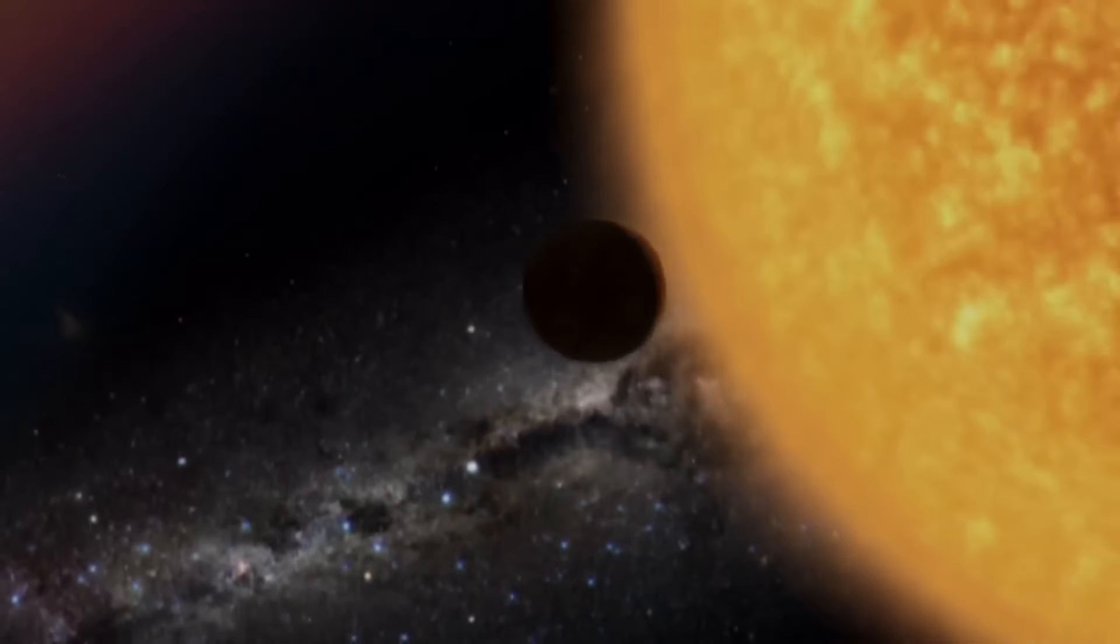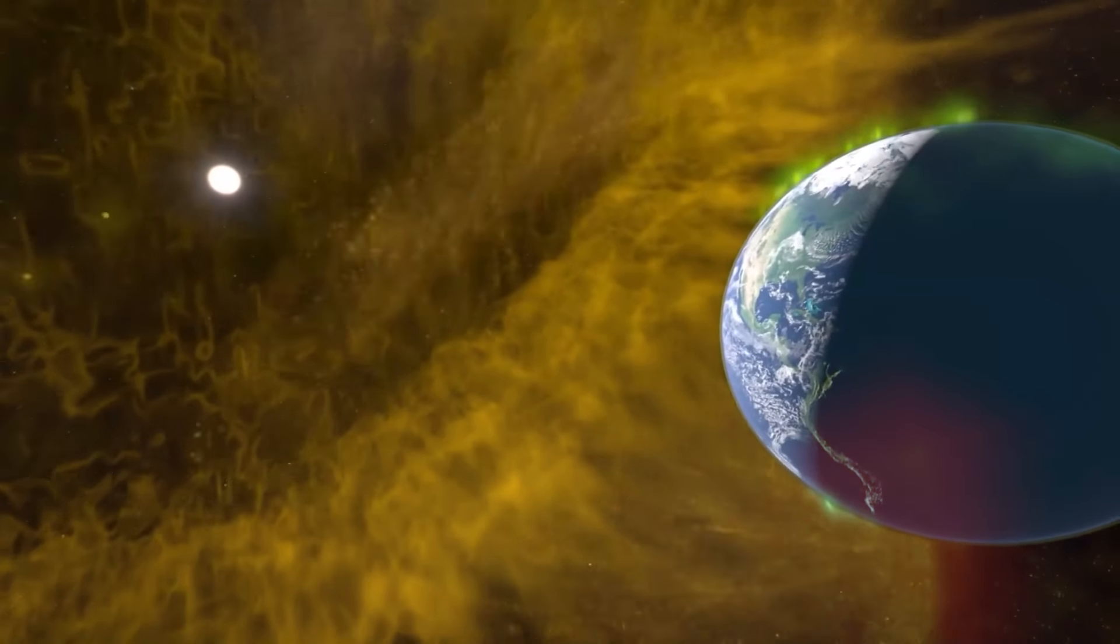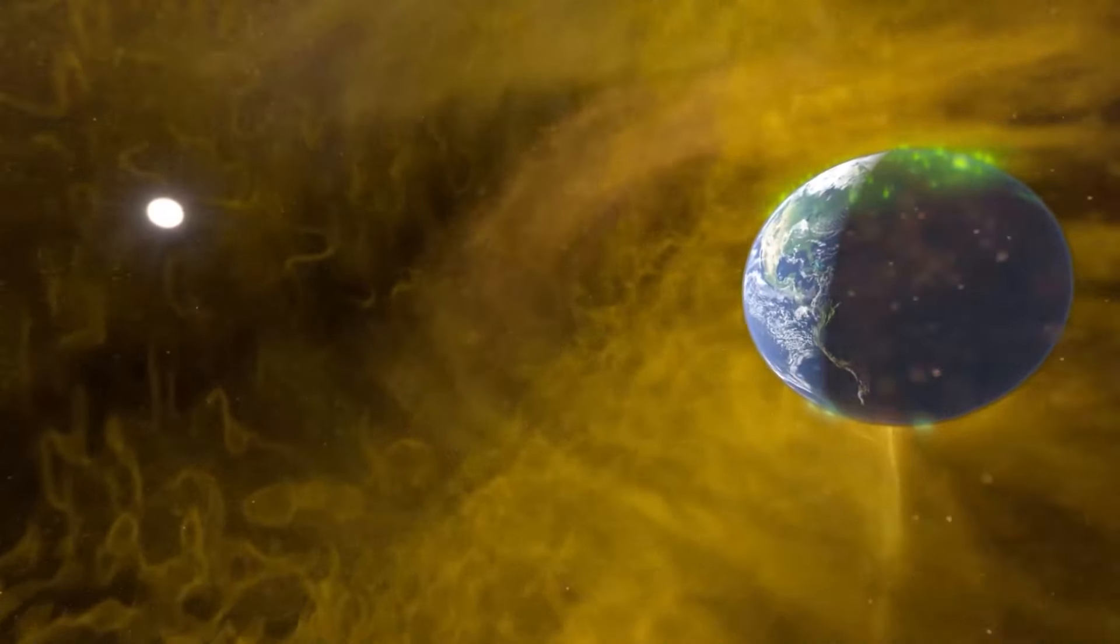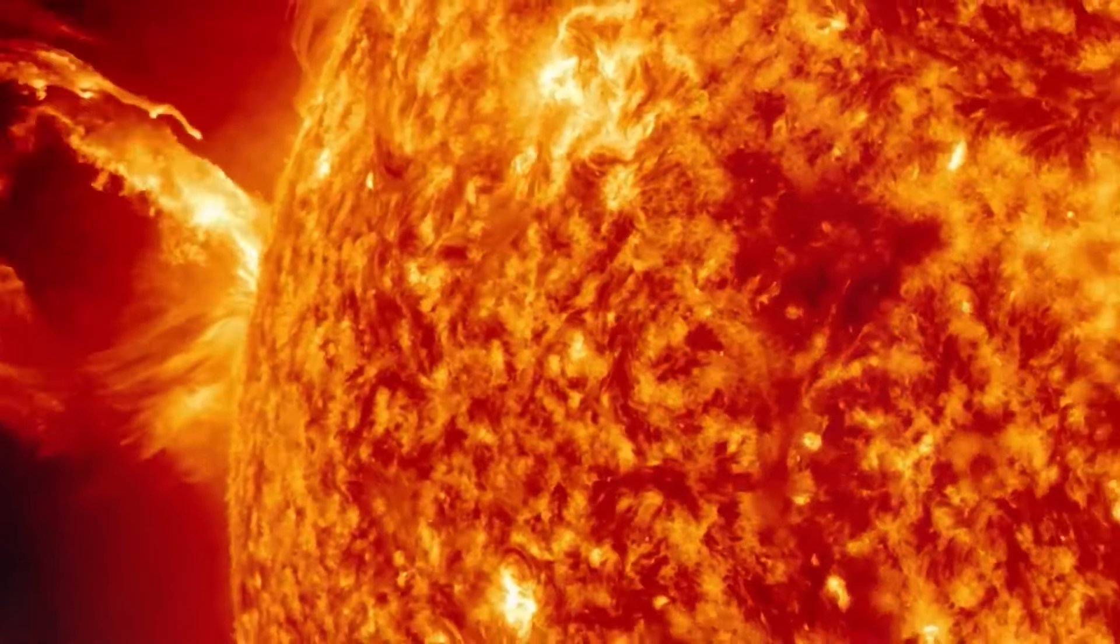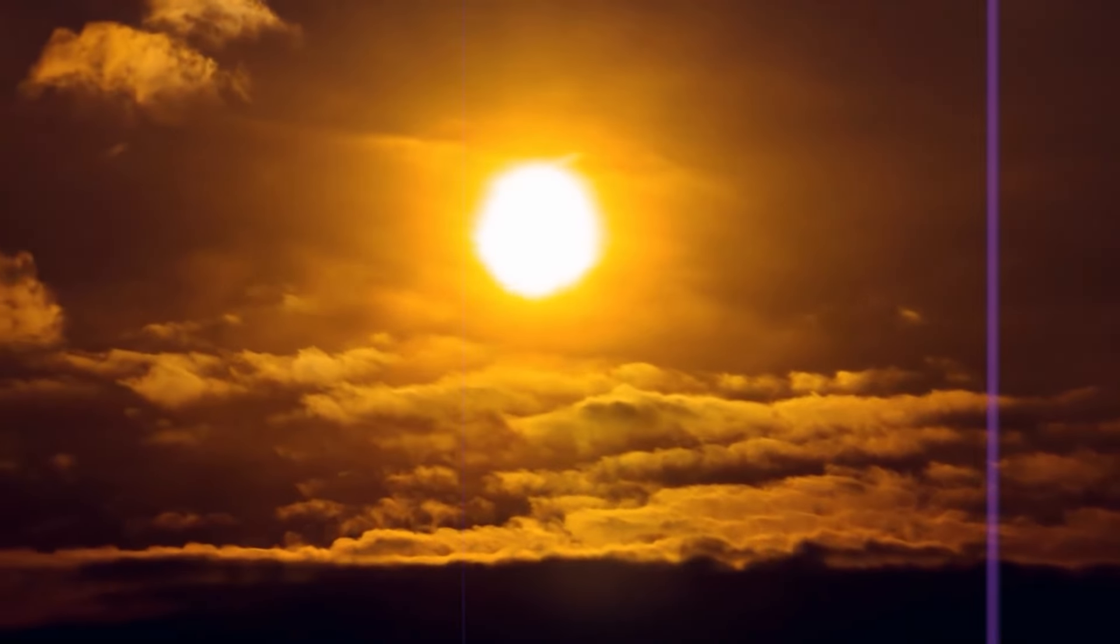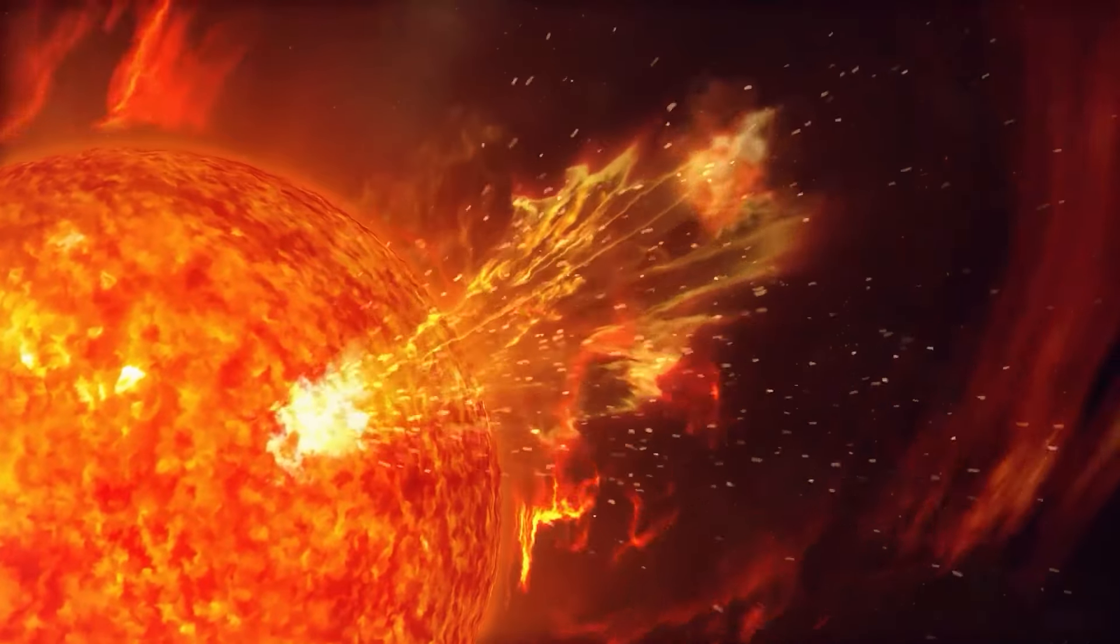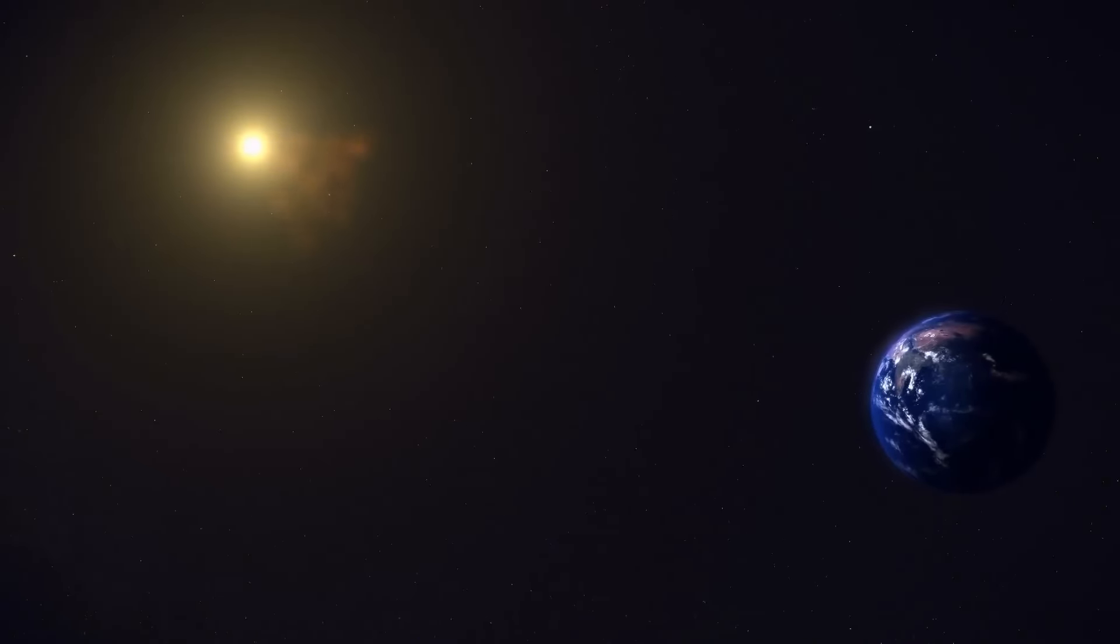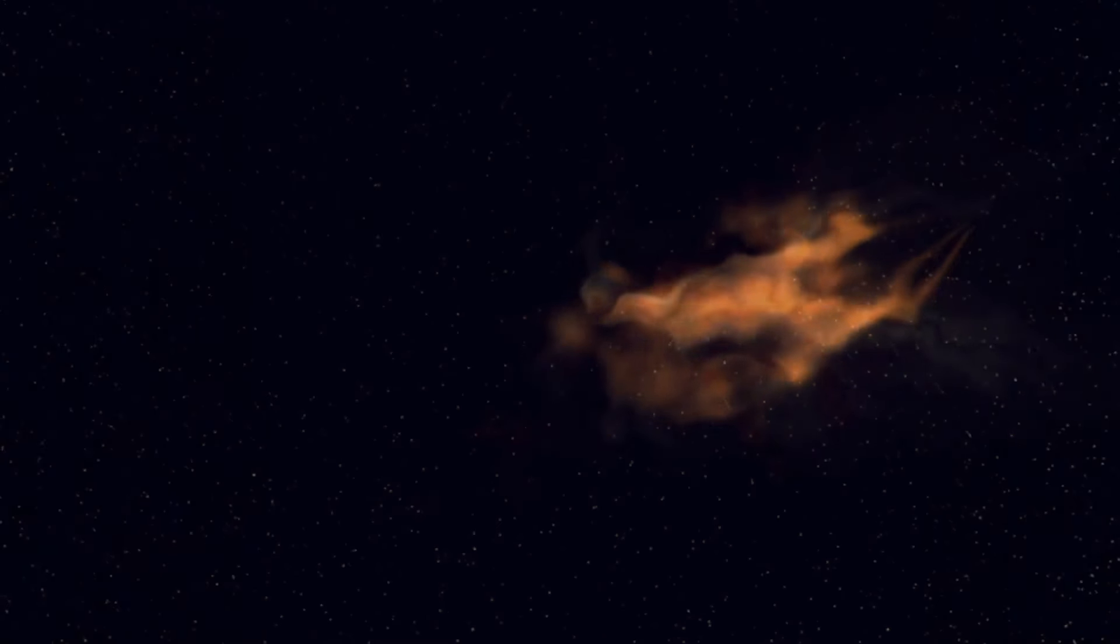As we stand on the cusp of Solar Cycle 25's peak, the current solar activity this year has sparked comparisons to the historic Carrington event of 1859, a solar storm so powerful that its effects were felt across the globe. The Sun, much like a calm, slumbering behemoth in the cosmic wilderness, occasionally stirs and flexes its immense muscles, sending ripples through the fabric of our daily lives. Its cycles of activity, much like the heartbeat of a giant, bring periods of tranquility punctuated by sudden bursts of ferocious energy.